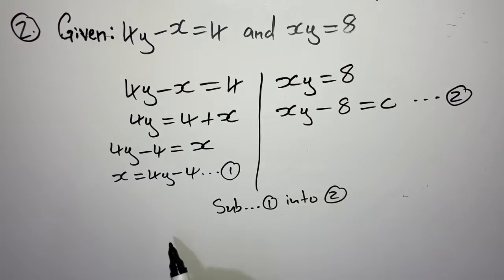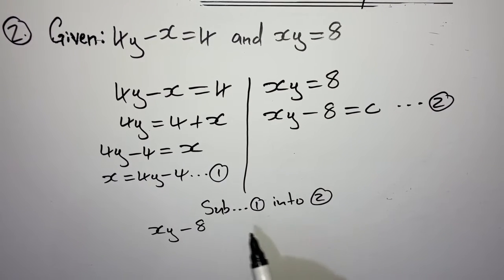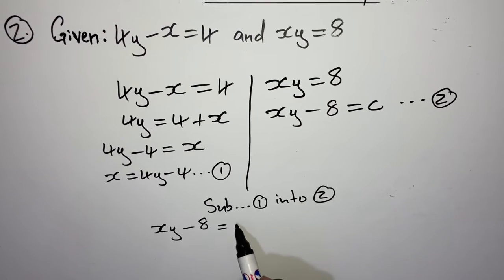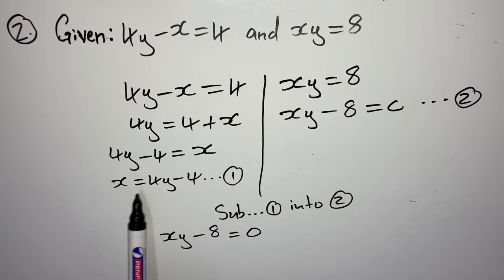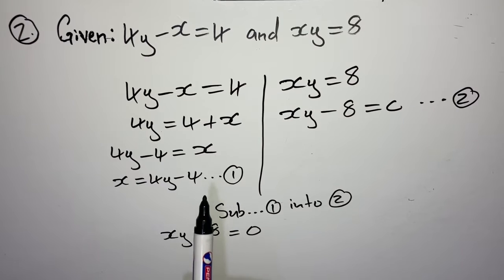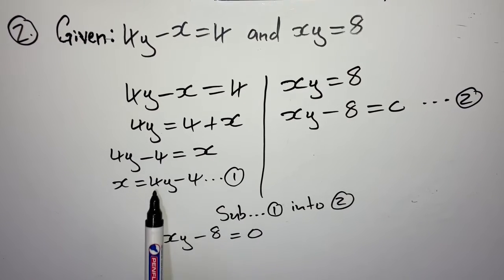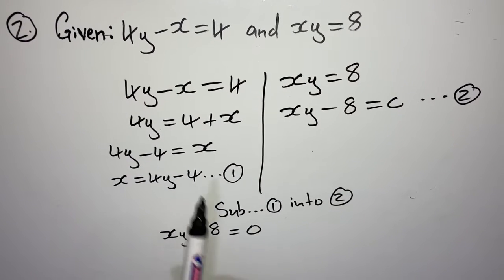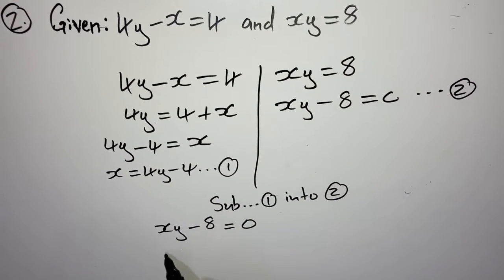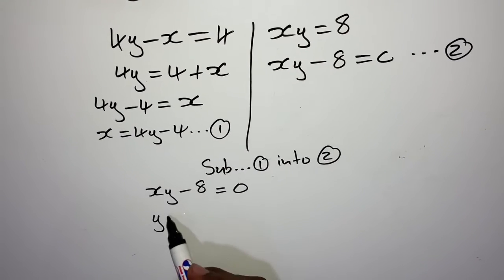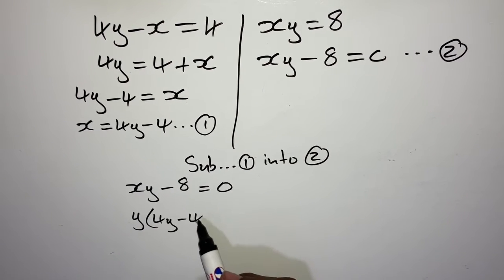Now substituting the second y value, y = negative 1, into equation 1: x = 4(negative 1) minus 4 = negative 4 minus 4 = negative 8. I conclude: when x was negative 8, my y was negative 1. We are done — we found our x and y values for this given equation where we were required to solve simultaneously.